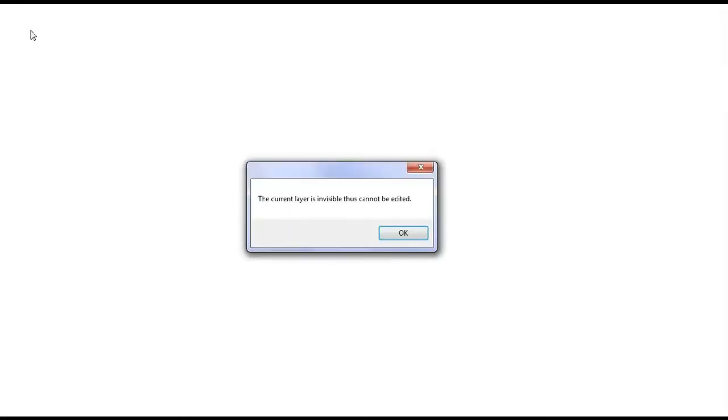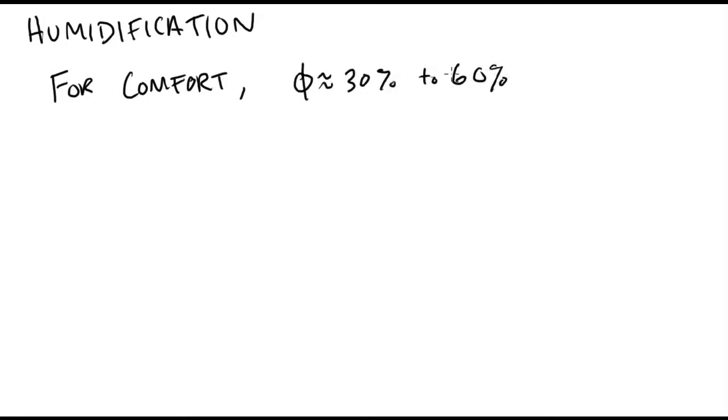So here we're looking at processes of humidification and dehumidification. For humidification, we need to do this when we're heating to get the humidity up to a range for human comfort. Usually that's relative humidity between about 30 and 60 percent.